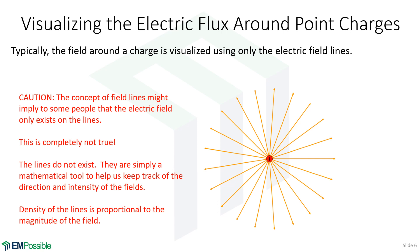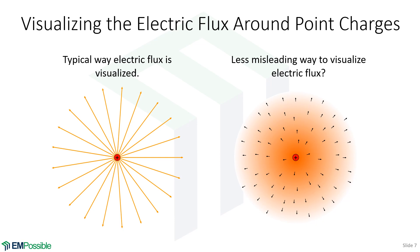One thing you can see from those lines, though, is the direction of the field, and the density of the lines also corresponds to the magnitude of the field. To summarize: on the left is the typical way that the field around a point charge would be visualized. The picture on the right is really what you should have in your minds — it's a smooth, continuous phenomenon, much more like a cloud or fog. But yes, there is also a direction associated with it. Get comfortable looking at pictures like on the left, but understand it really is what we're seeing on the right.